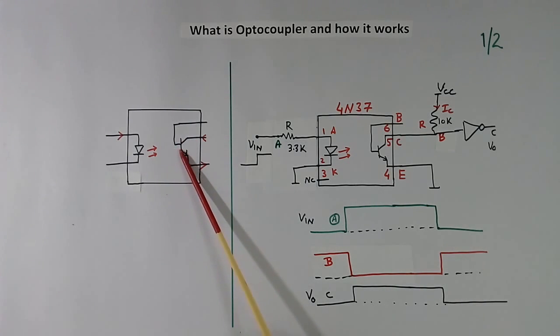This photo transistor and this LED are matched for the wavelength of this light. Because of light, there is no electrical connection. So we get electrical isolation between this side and this side.